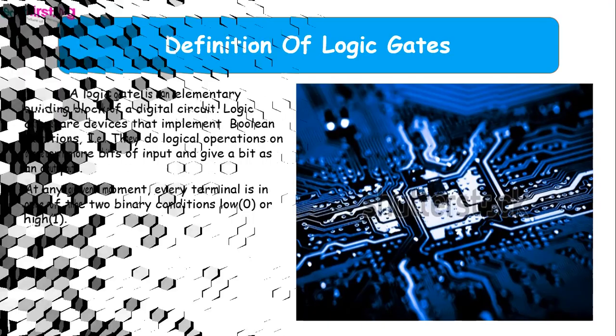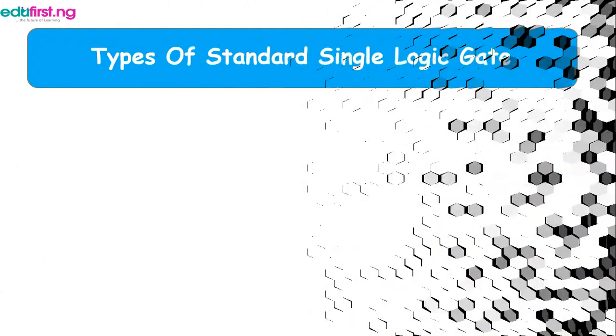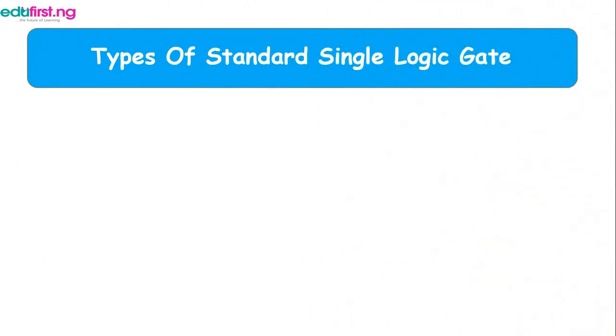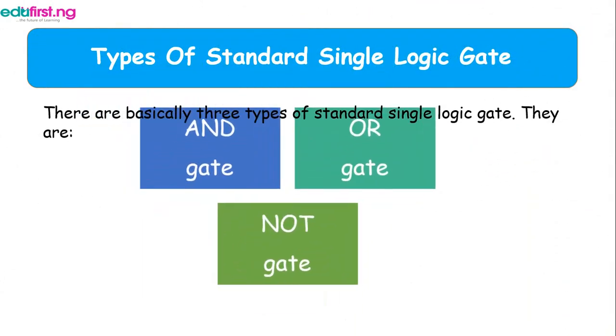Now types of standard single logic gates: there are basically three types. There are AND gates, OR gates, and NOT gates.